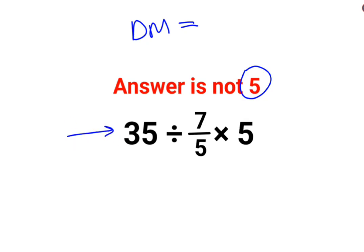So in sums like these, you need to always go from left to right. So first we will do 35 divided by 7 upon 5.